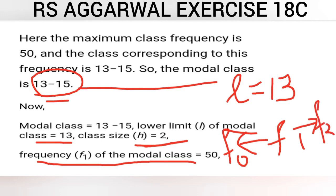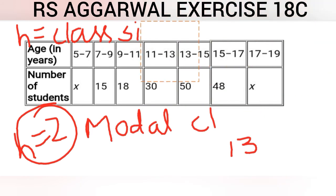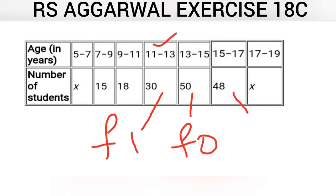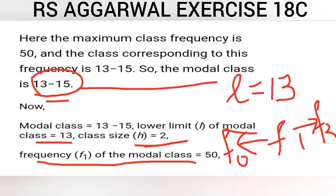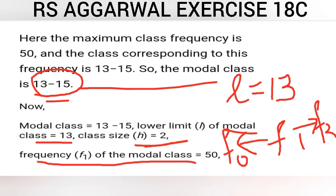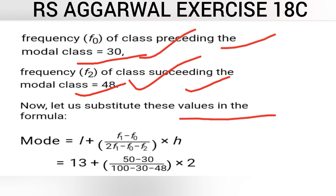Now, looking at the table, the frequency of the modal class is called f0. The class just before the modal class is 11 to 13, and its corresponding frequency is called f1. The class after the modal class has frequency f2. So the frequency f0 of the modal class is 50, the frequency f1 of the preceding class is 30, and the frequency f2 of the succeeding class is 48. We now substitute these values into the formula for mode.